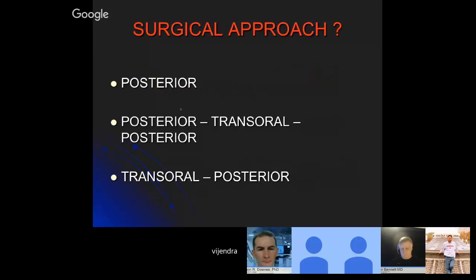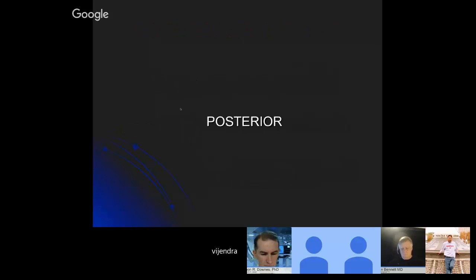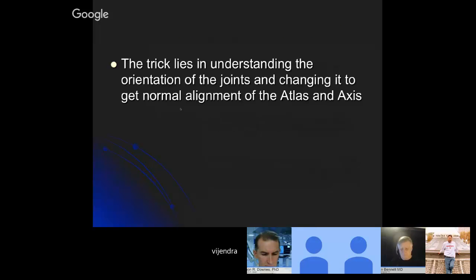We have three approaches for that — mainly two: posterior approach and transoral approach. But sometimes you go posteriorly and are not able to reduce it, then go transoral, remove the offending element, and then go posteriorly again. The trick lies in understanding the orientation of the joints and changing it to get normal alignment of atlas and axis.